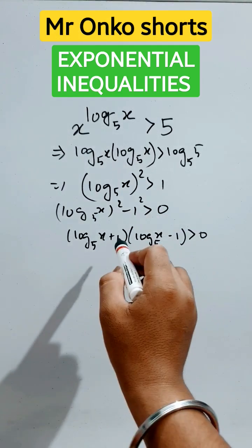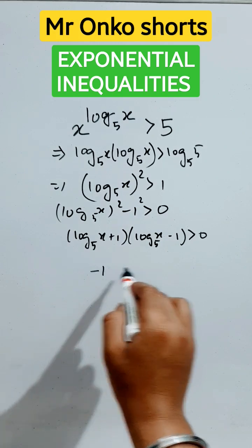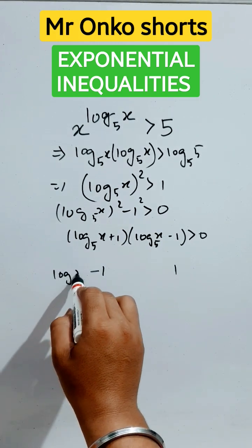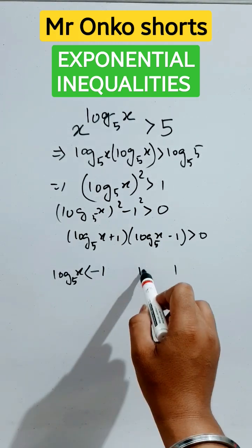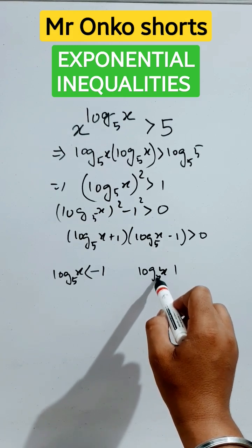According to the inequalities properties, these are the critical values: minus 1 and 1. So logarithm of x to the base 5 will be less than minus 1, and logarithm of x to the base 5 will be greater than 1.